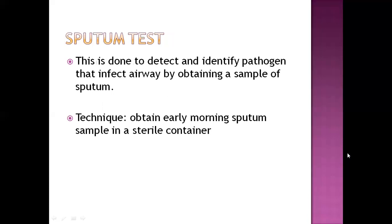The next procedure is sputum test. Sputum is a production from the airway which is a defense mechanism of the body, or produced because a pathogen has entered the airway. The test is done to detect and identify the pathogen, since pathogens are present in the sputum and we can test it to find out the nature of the pathogen.